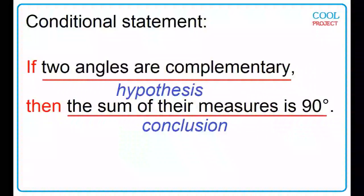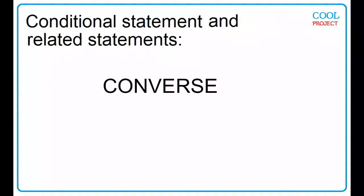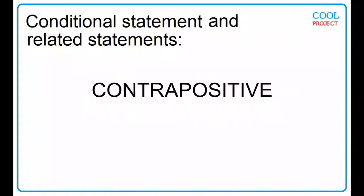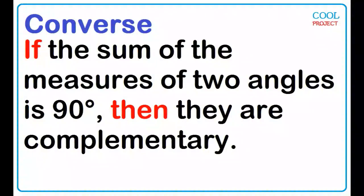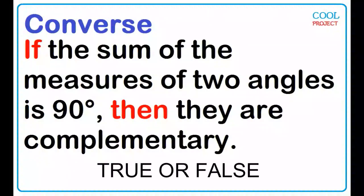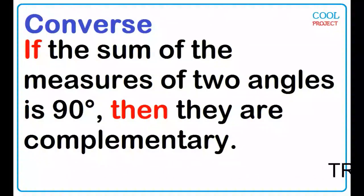Given an if-then statement, we can create three related statements: converse, inverse, and contrapositive. The converse of the conditional statement is formed by interchanging the hypothesis and the conclusion. If the sum of the measures of two angles is 90 degrees, then they are complementary. The converse can also be true or false. Is this true or false? True.